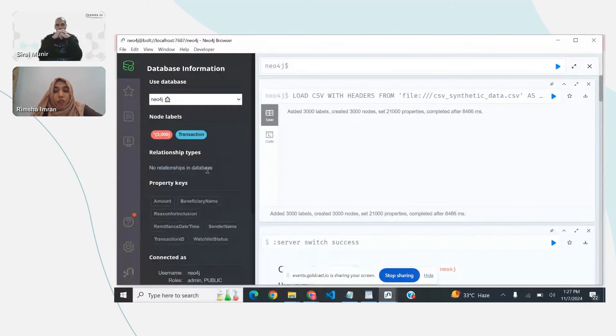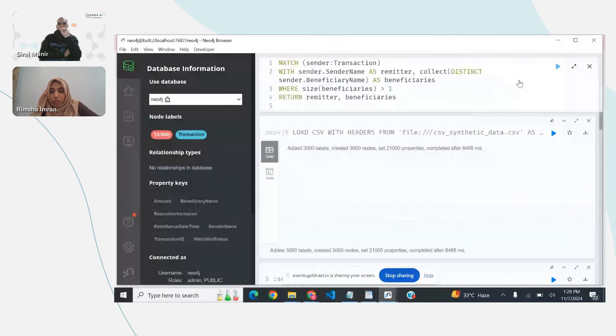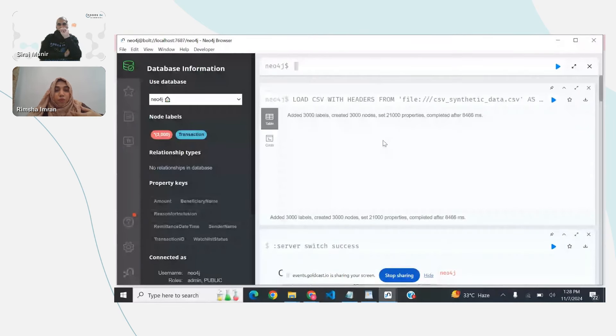If you just look at the transactions, you might miss that a particular sender is frequently sending money to multiple beneficiaries. This could be a sign of a money laundering scheme. Now, let me show you how we resolve this by modifying our query.